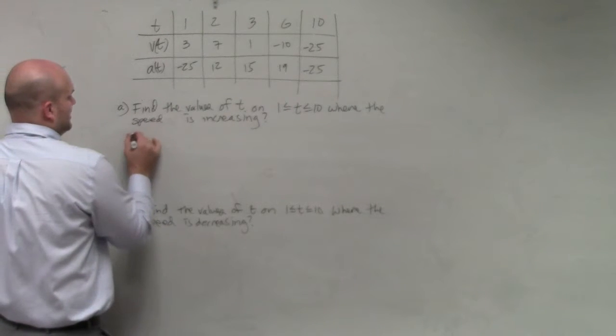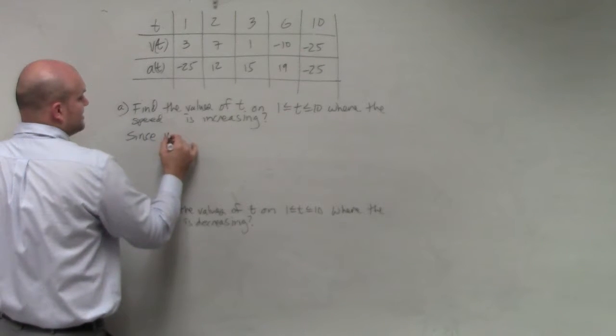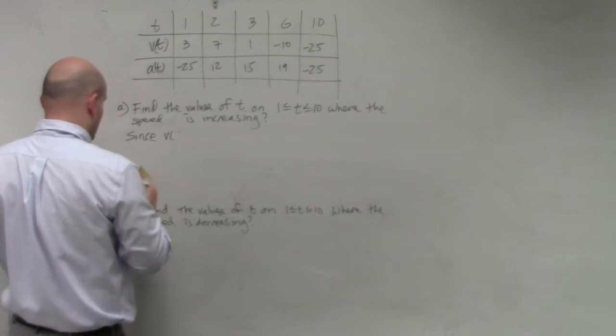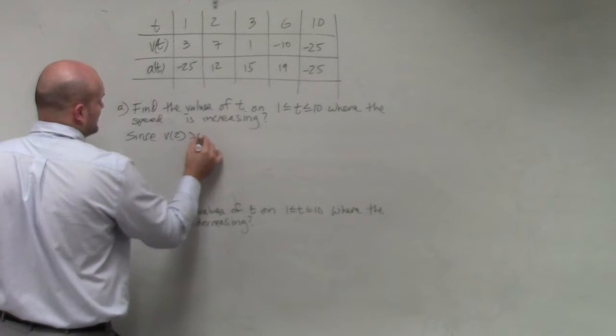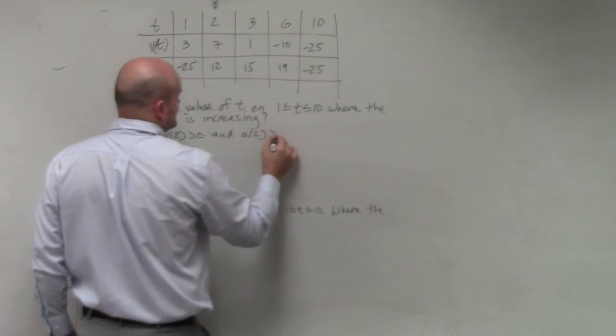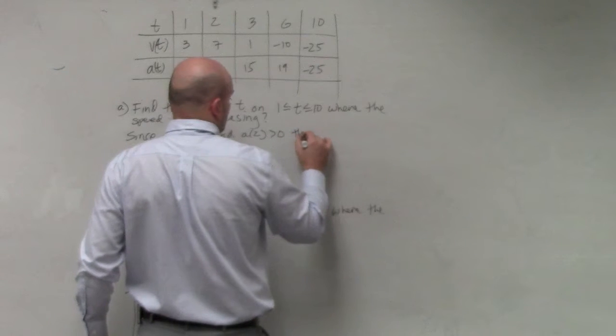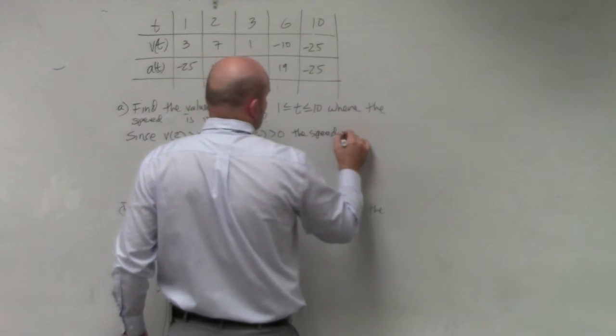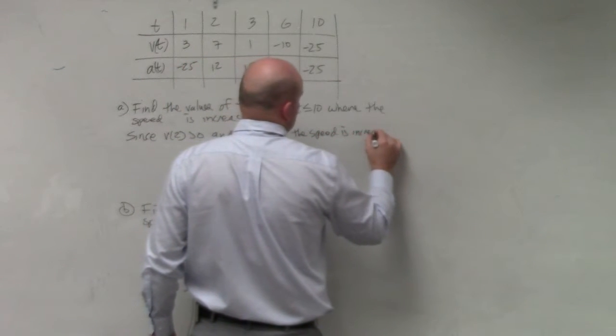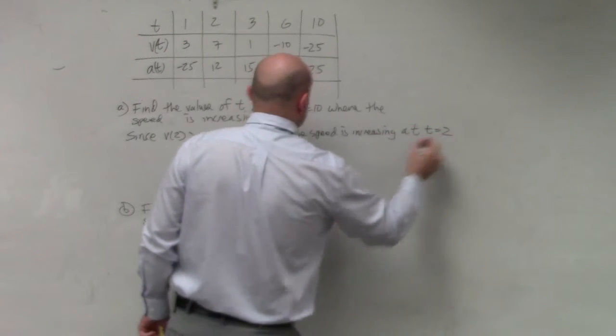So what I can write is, since v's of 2 is greater than 0, and a sub 2 is greater than 0, speed is increasing at t equals 2.